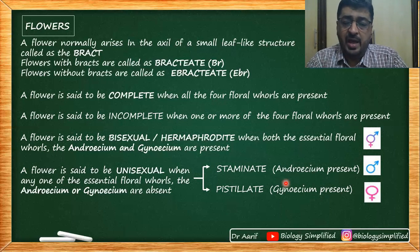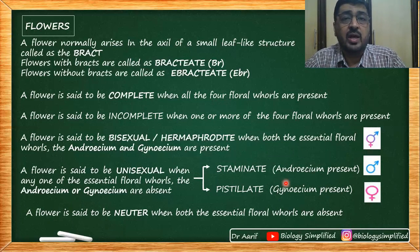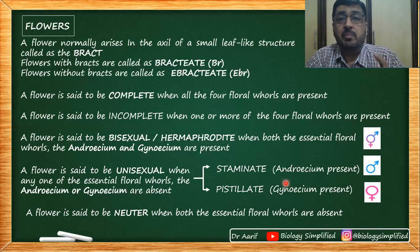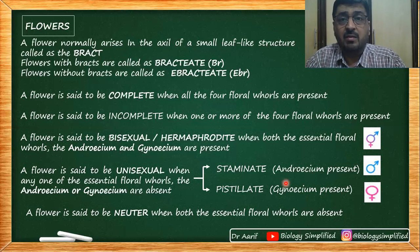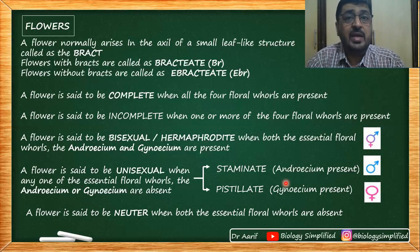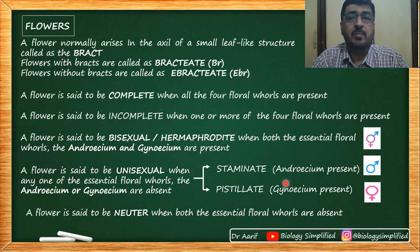If the flower does not have androecium or gynoecium, the flower is called a neuter flower. If a plant has different types of flowers — bisexual, male, and neuter — such a plant is called a polygamous plant. Check the government textbook for an example of a polygamous plant.